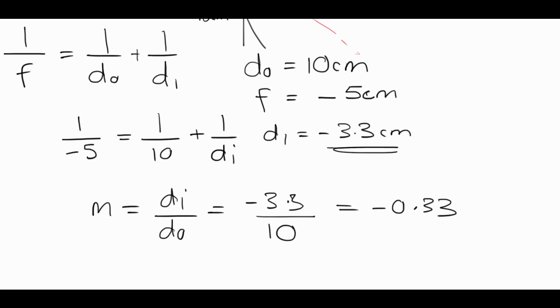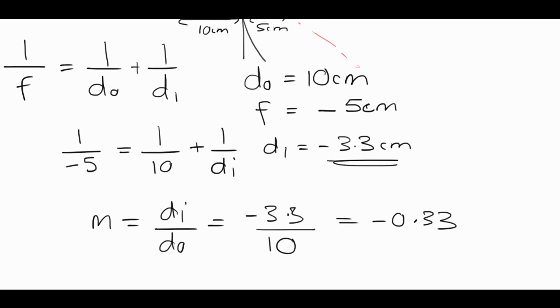So that's the only other trick, really, with the difference between concave and convex. Is if they're a convex mirror, you always use the f as negative. The same thing actually applies with lenses. And we'll talk about how it applies for lenses in the next tutorial.